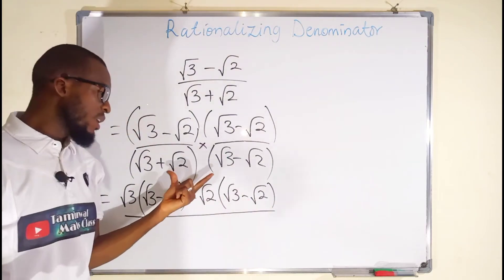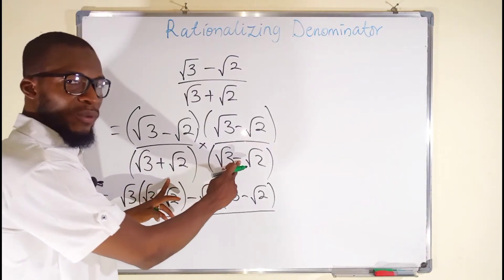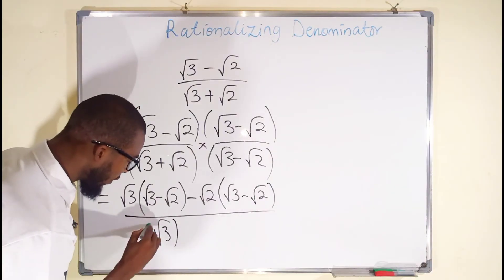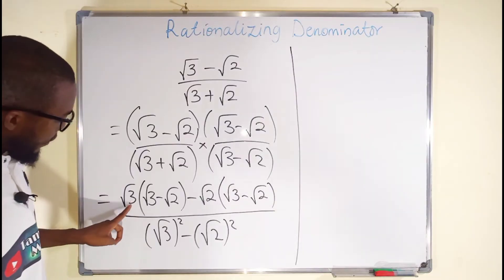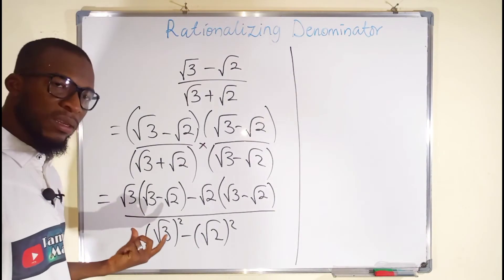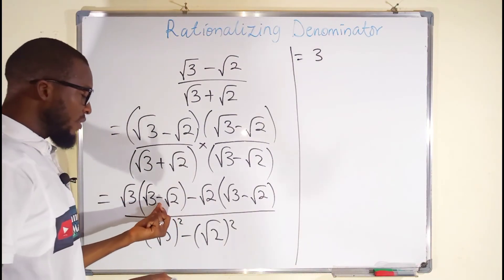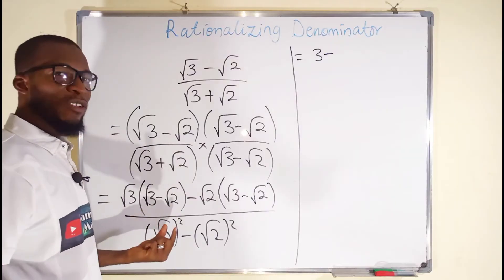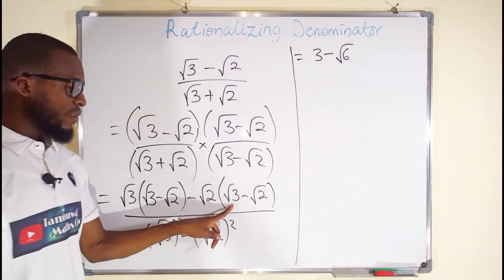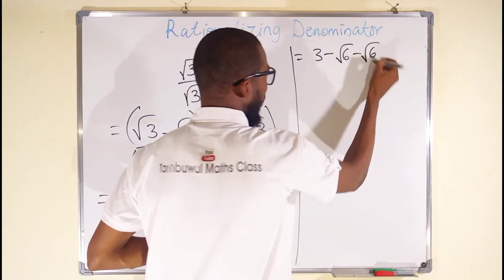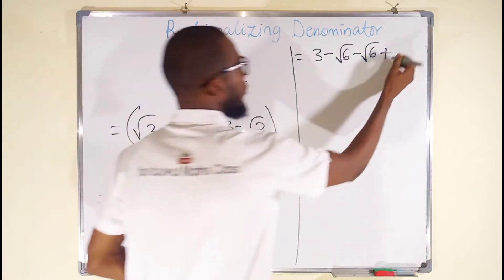Under the denominator we have the difference of two squares — the terms are exactly the same, they just have a difference of sign. Take the first term, square that, subtract, take the second term, square that. Moving to the next line: root 3 times root 3 gives root 9, and square root of 9 is 3, so we have 3. Then negative root 2 times root 3 gives negative root 6. Then minus root 6, giving minus root 6. Then minus minus is plus, and root 2 times root 2 is root 4, which is 2. So we have 2 here.